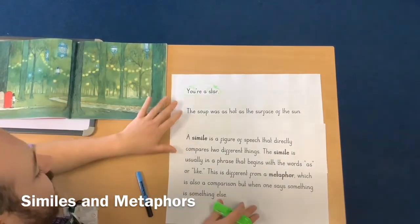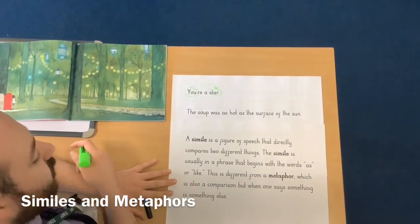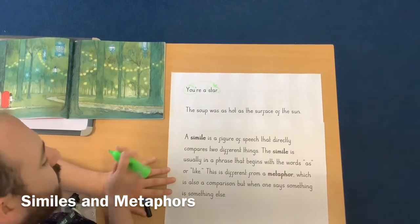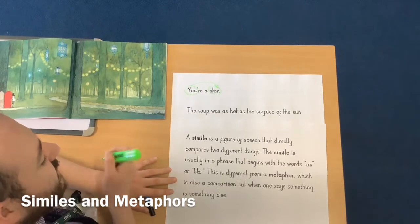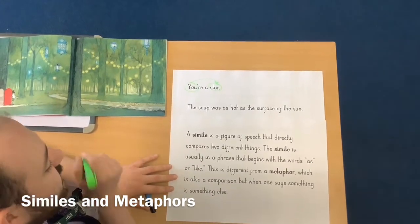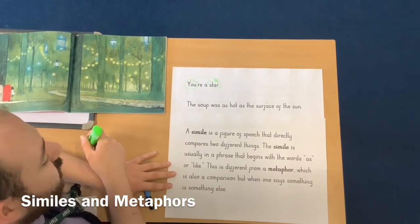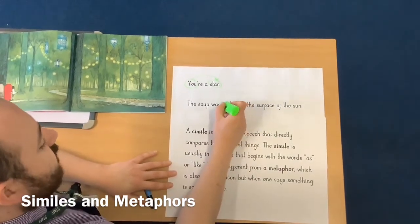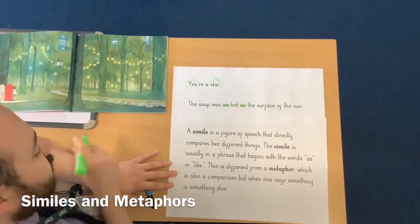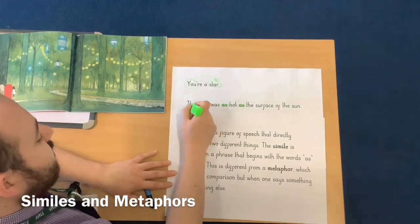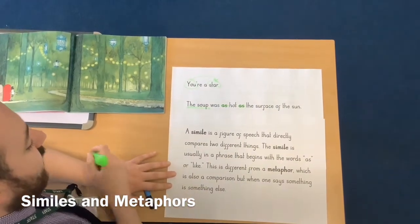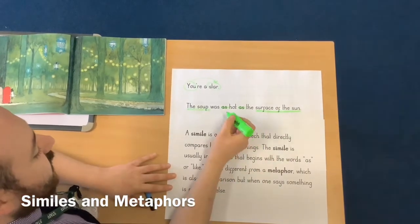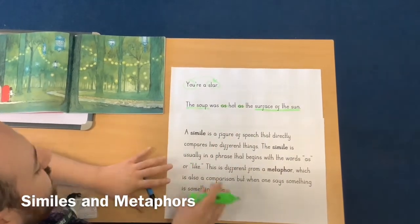Let's take a look at this next one: 'The soup was as hot as the surface of the sun.' What I want you to think — is this a simile or is it a metaphor? It's a simile, isn't it? Because it uses the word 'as'. The soup is being compared to the surface of the sun using 'as', so therefore it's a simile.